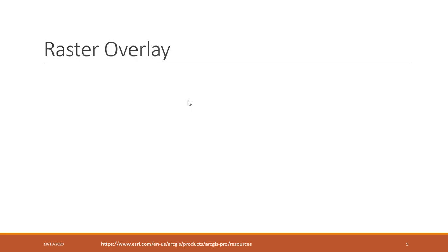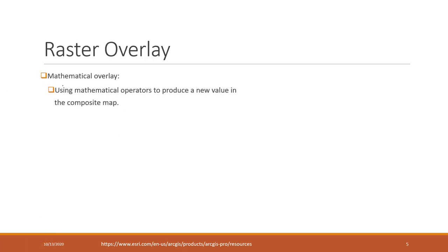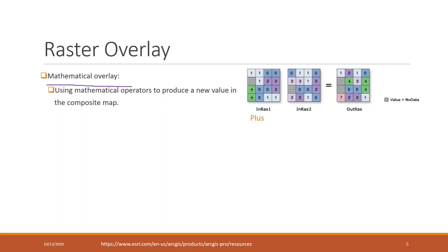We can also do something similar to overlay analysis for vector data. For raster data, we can do mathematical overlays — cell by cell calculations. For example, using a plus operation on two input rasters: cell value 1 plus 0 gives 1, and 1 plus 1 gives 2. You can also do minus, divide, etc. However, if one layer has no data in a cell, the output will also be no data.